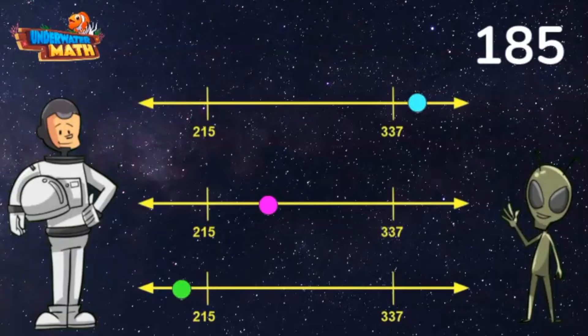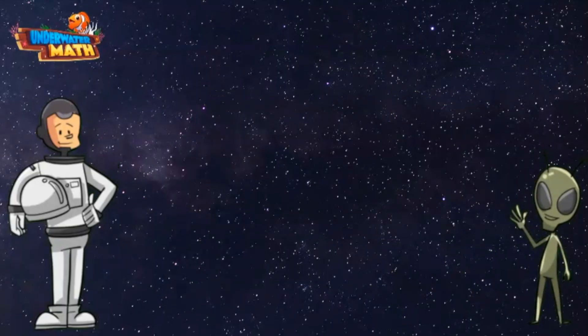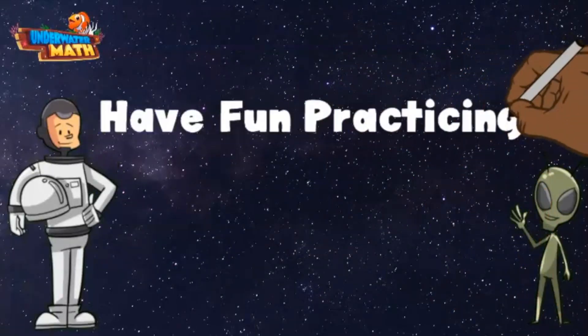The only number line where the point is located before 215 is the last one with a green point. The last number line best represents the number 185. All right, space kids, you are ready to try this out on your own. Have fun!